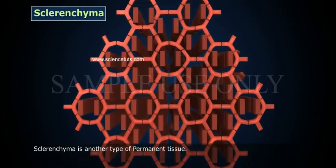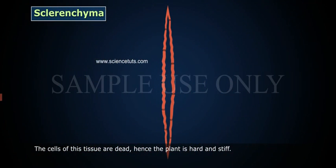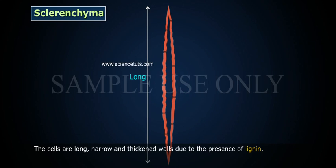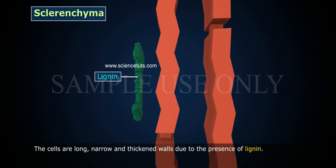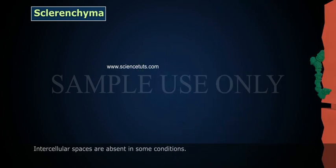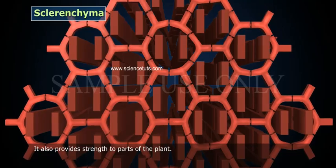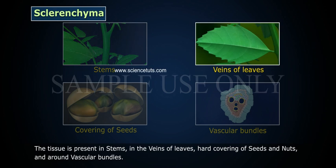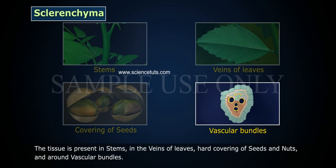Sclerenchyma is another type of permanent tissue. The cells of this tissue are dead, hence the plant is hard and stiff. An example is the husk of a coconut. The cells are long, narrow, and have thickened walls due to the presence of lignin. Intercellular spaces are absent in some conditions. It also provides strength to parts of the plant. The tissue is present in stems, in the veins of leaves, hard covering of seeds and nuts, and around vascular bundles.